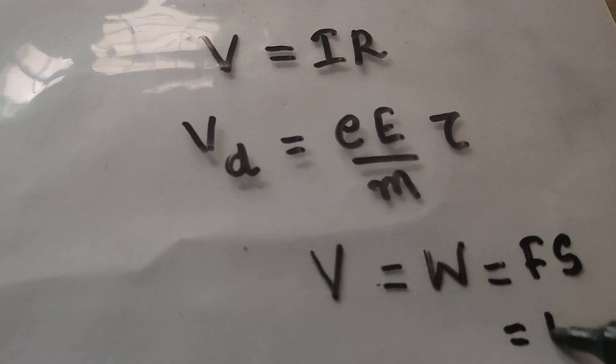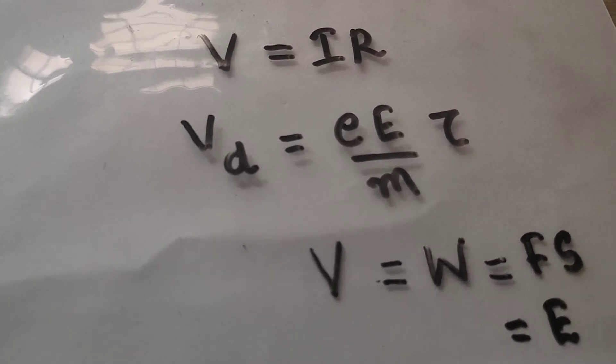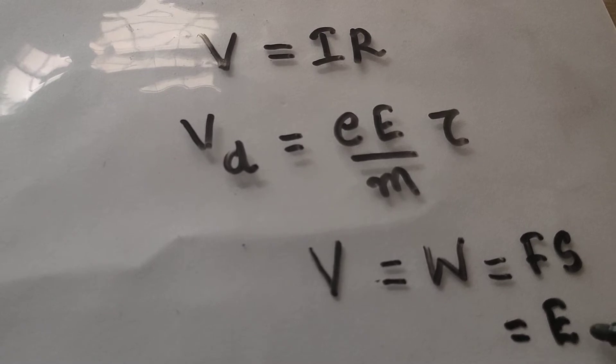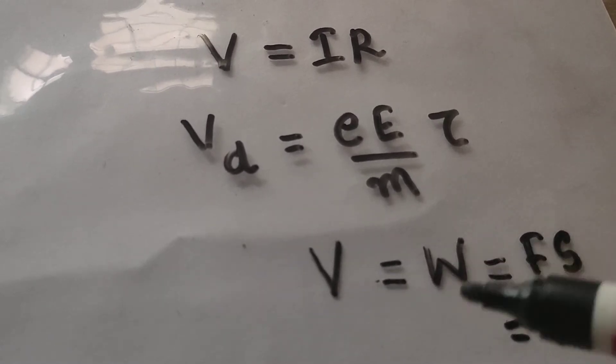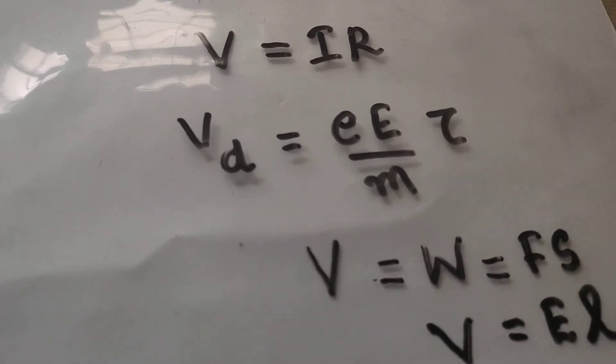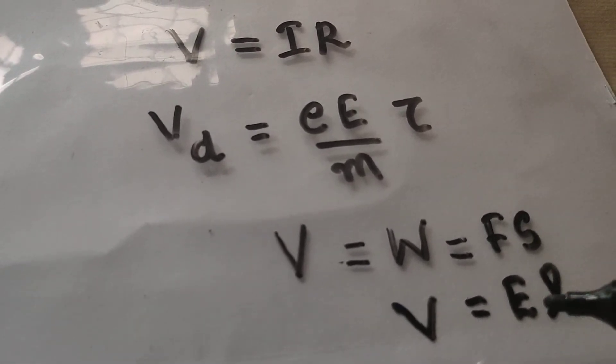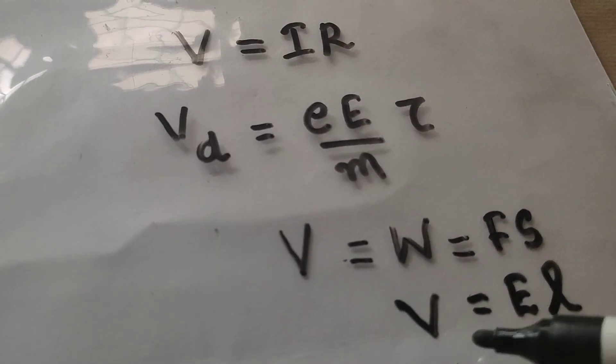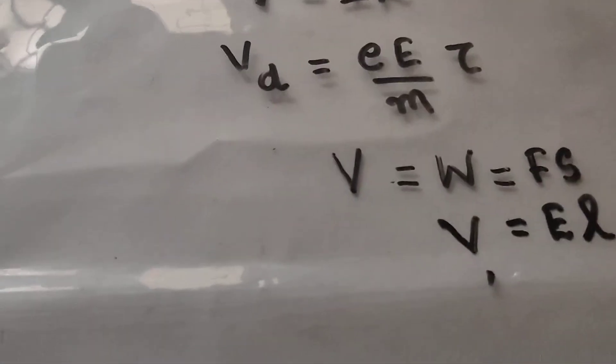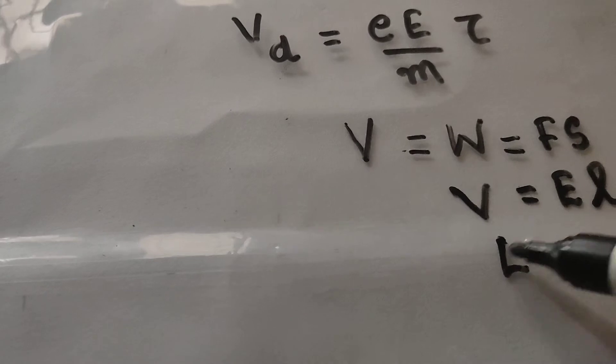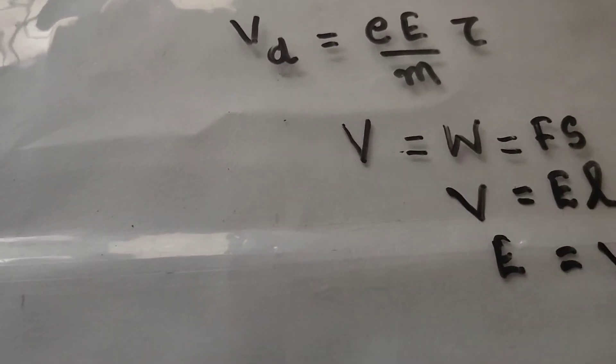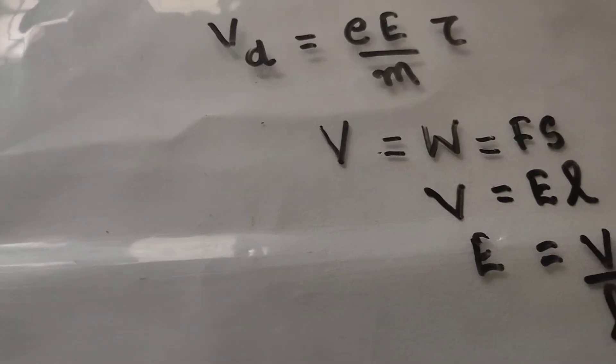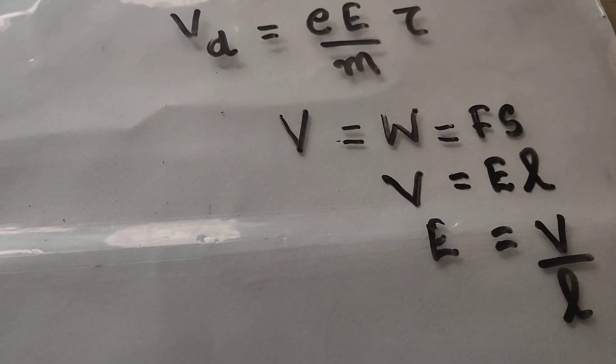Here, the force is our electric field and displacement is equal to the length of the conductor. So, you can write potential V in terms of electric field as E into L. So, what is E from this equation? E is equal to V by L. So, you can write electric field as V by L.